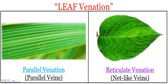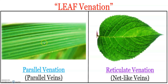Venation. The arrangement of veins and veinlets in the lamina of the leaf is known as venation. When the veins form a network, the venation is known as reticulate — it is net-like. When the veins run parallel to each other within a lamina, the venation is termed parallel. Leaves of dicots generally possess reticulate venation, while parallel venation is characteristic of monocotyledonous plants.